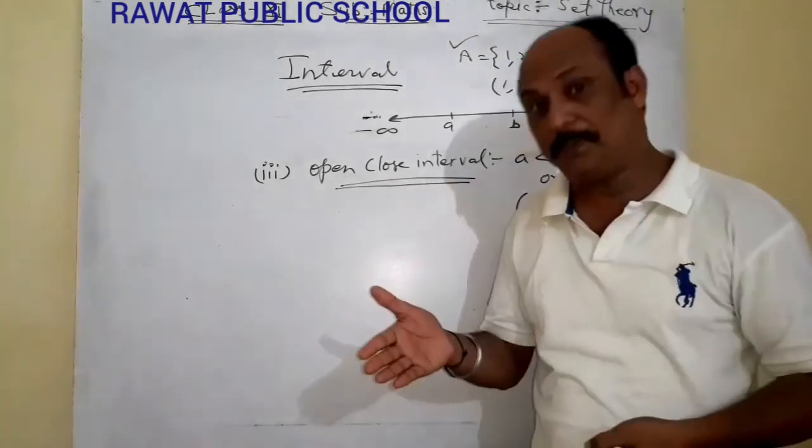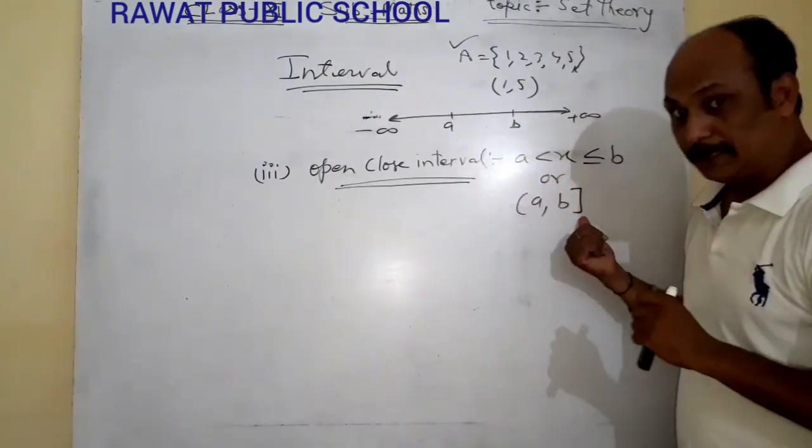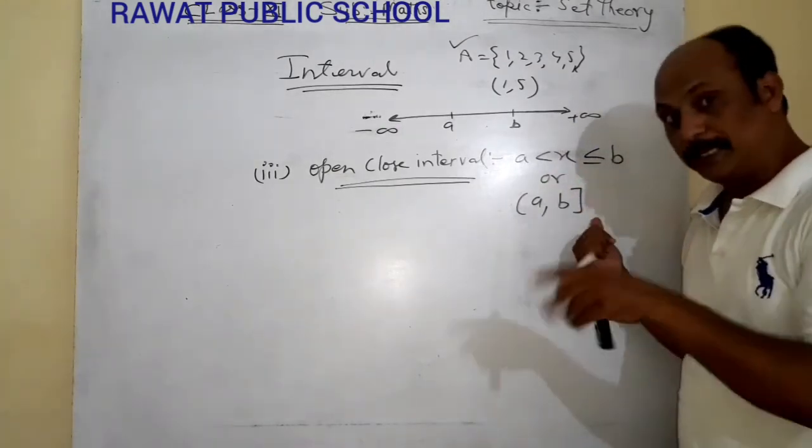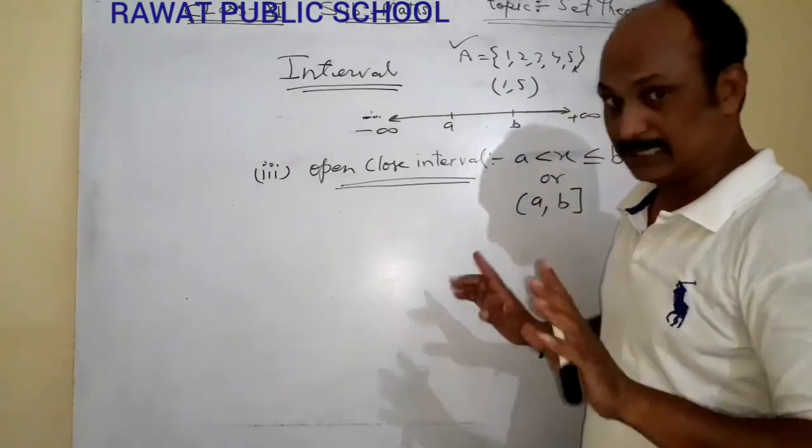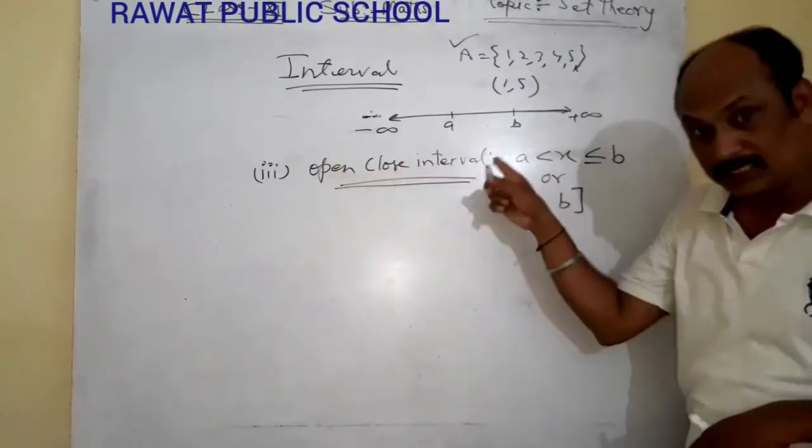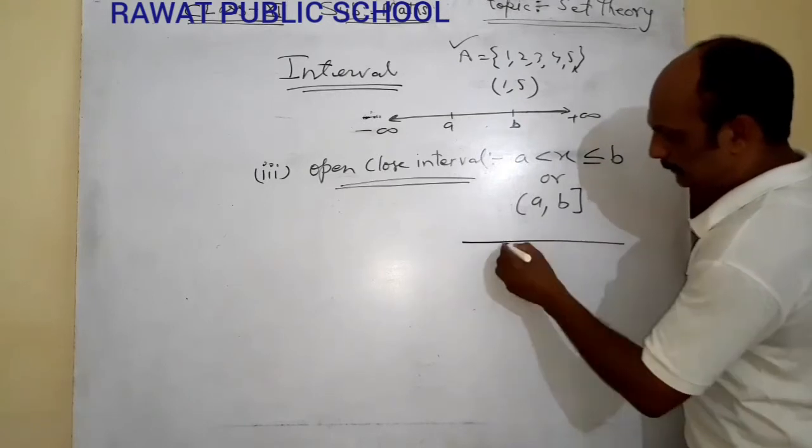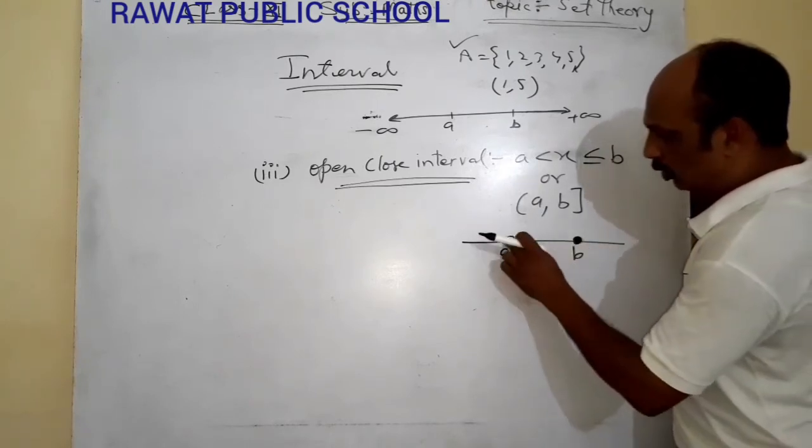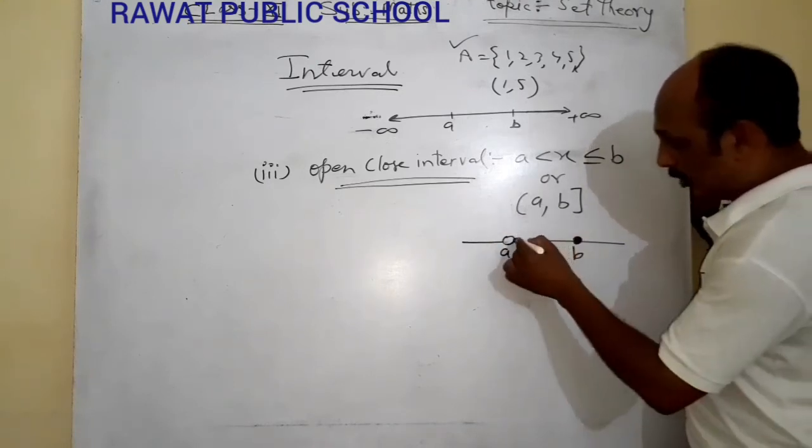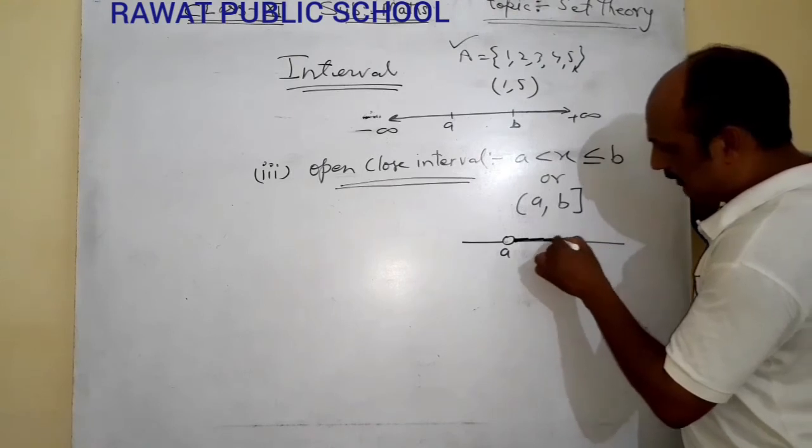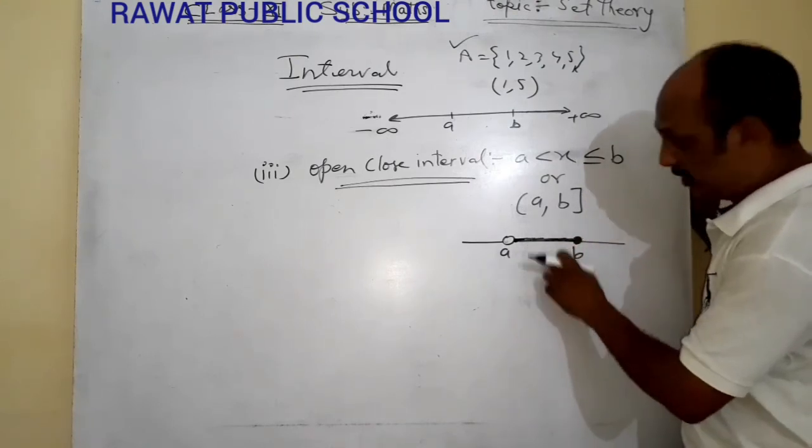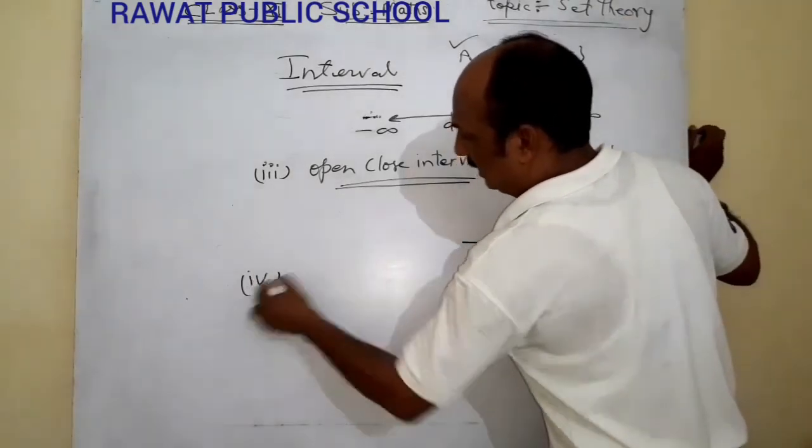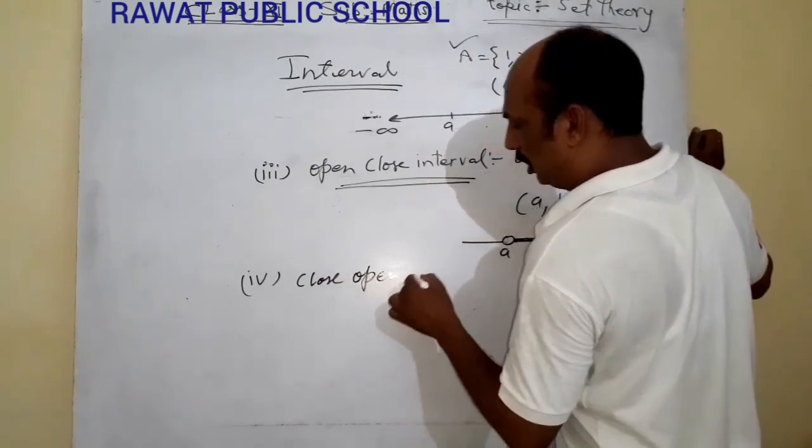Sometimes in questions or in your book, this is mentioned. Small bracket is given here and big bracket is here. It is Open-Close Interval. On the number line, it is A and it is B. Here we draw a blank circle, here we draw a dark circle, and all these numbers from here to here are included. This is representation of Open-Close Interval.